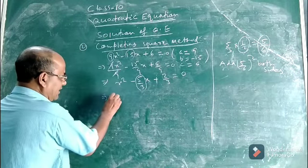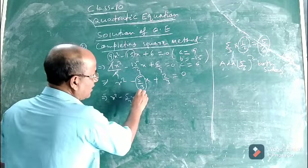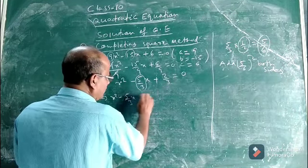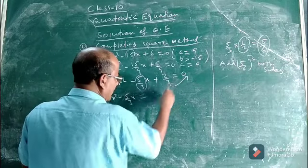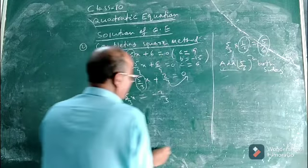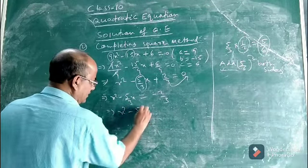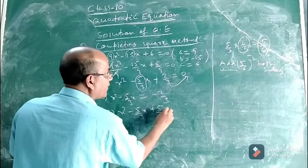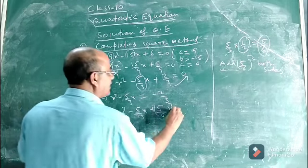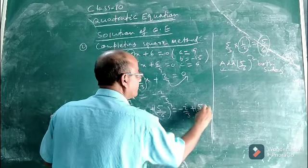So we write: x² minus 5/3 x, then take 2/3 to the right-hand side, giving minus 2/3 on the right. Now add (5/6)² to both sides: x² minus 5/3 x plus (5/6)² on the left, and minus 2/3 plus (5/6)² on the right.